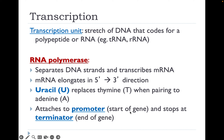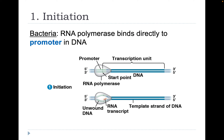Initiation in bacteria: RNA polymerase binds directly to the promoter in DNA. Here we see the double-stranded DNA molecule; RNA polymerase binds to the promoter, unzips the DNA, and begins copying a complementary strand to the template strand. The template strand runs 5' to 3' in this image.